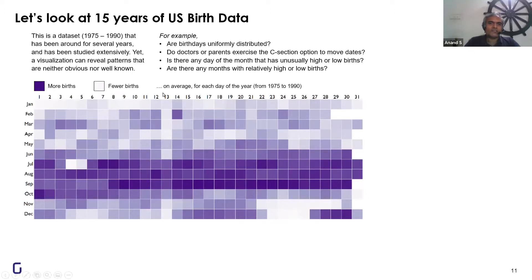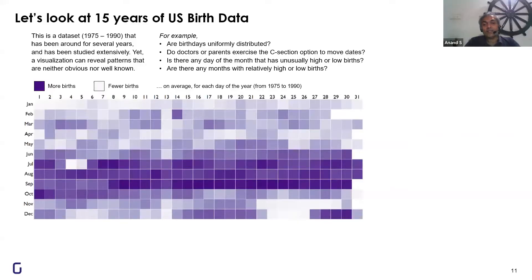But do you notice the stripe on the 13th of every month? Very few children are born on the 13th because it's considered an unlucky number. So it's not just whether the hospitals are available — it's also whether the child is born on an unlucky day. But there are some lucky dates as well.